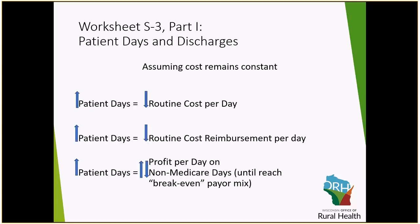As this chart shows, the basic assumption when talking about reimbursement is that the higher the patient days are — or the larger the increase from a previous cost reporting period — your routine cost per day is decreased, because the denominator in the equation is increasing. On the flip side, if your patient days are decreasing, your routine cost per day and your reimbursement is actually going to be increasing. There's different analysis you can do to figure out what that break-even payer mix is. At a very high level, if your patient days are up from the previous period, you can assume you're most likely looking at a decrease in reimbursement and a potential payback on your cost report at the end of the year.